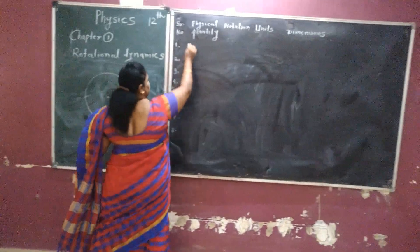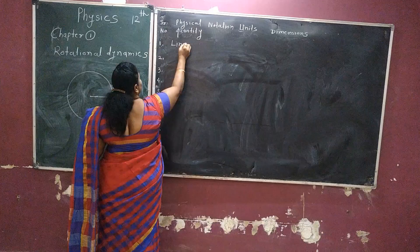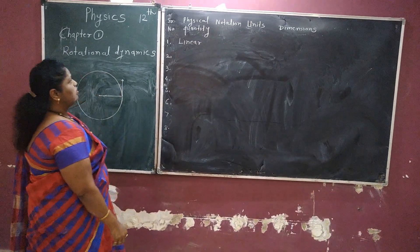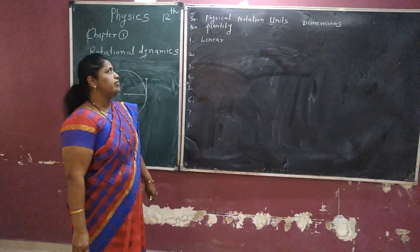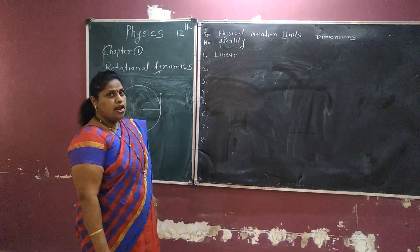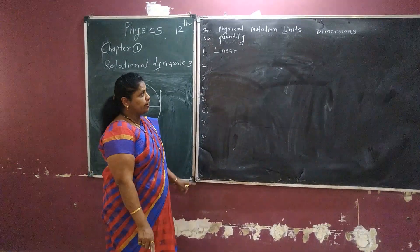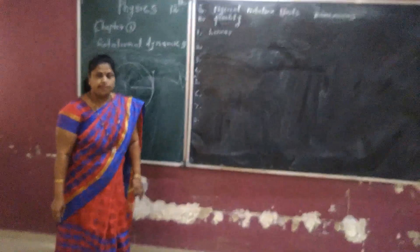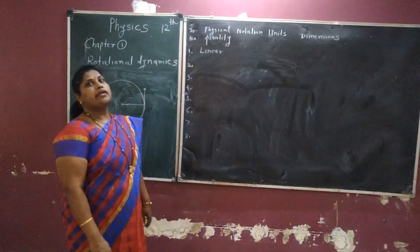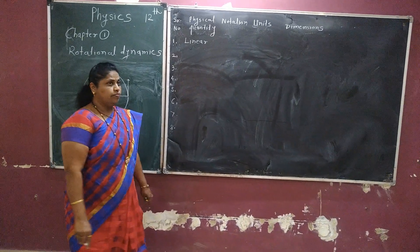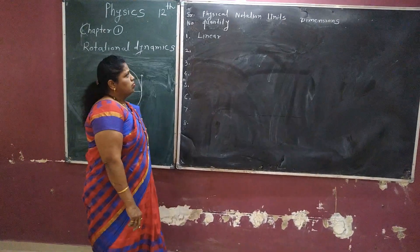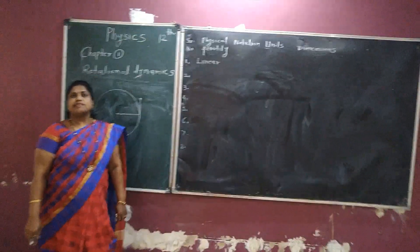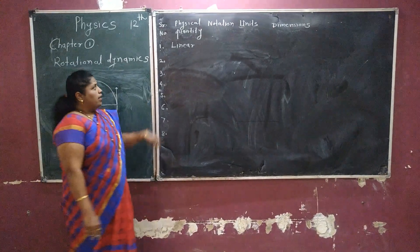First, we prepare a chart with five columns: number, physical quantity, notation, units, and dimensions. Dimensions are written in rectangular brackets in capital letters M, L, and T. M is the mass, L is the length, and T is the time. Time is always written in a circle. Sometimes it is written as L, M, T where L is the length, M is the mass, and T is the time.